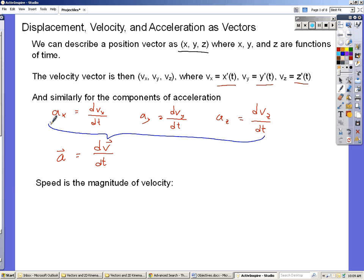But now that we're in two or three dimensions, the magnitude of a vector is given by the Pythagorean theorem. So the speed is equal to the square root of vx squared plus vy squared plus vz squared, all under the square root. Notice that's always going to be positive.